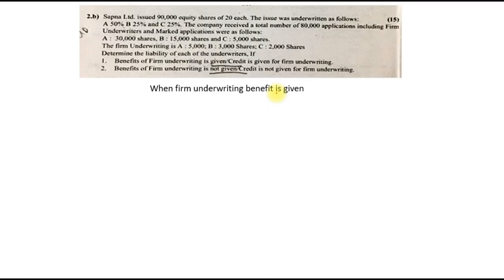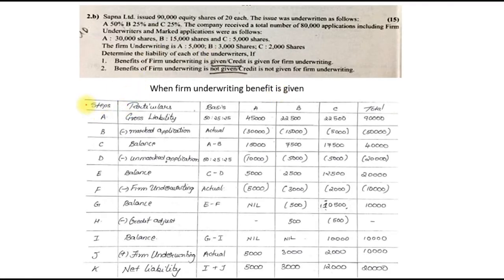Very simple problem sum. Let us start first when the firm underwriting benefit is given. Remember the format — the columns will be steps, particulars, basis, A, B, C because there are three underwriters, and total. Sapna Limited issued 90,000 equity shares, so the total is 90,000. Step number one is called gross liability. 90,000 is the total number of shares to be issued, underwritten in the ratio 50%, 25%, and 25% — written under the basis. So 90,000 into 50% is 45,000; 90,000 into 25% is 22,500, and again 22,500.